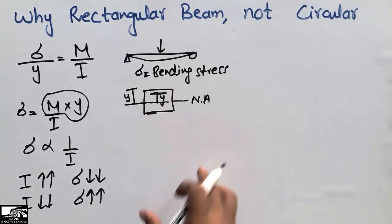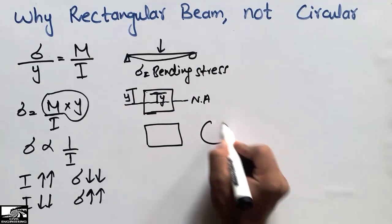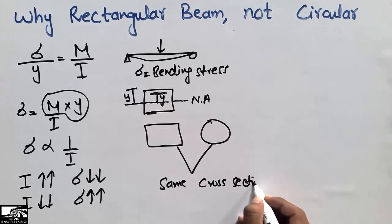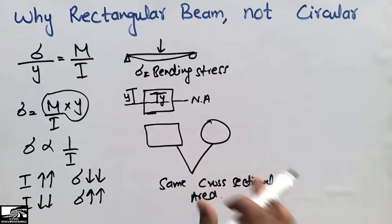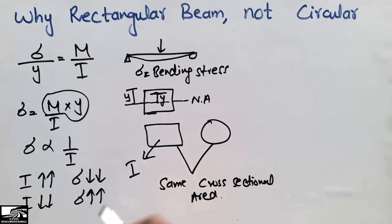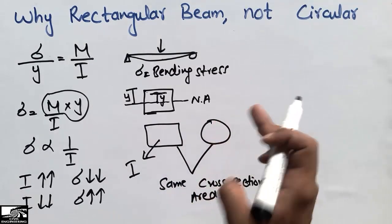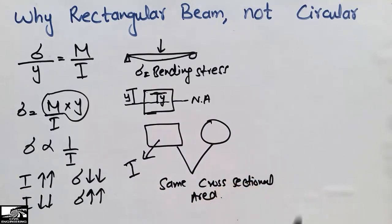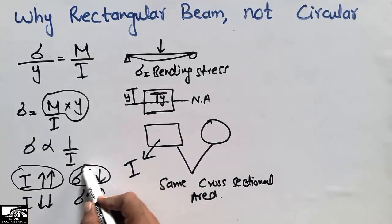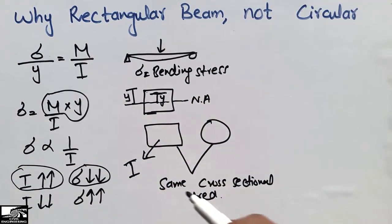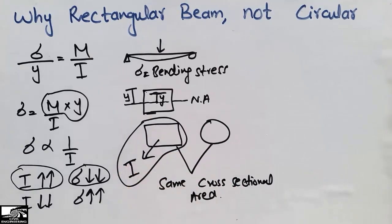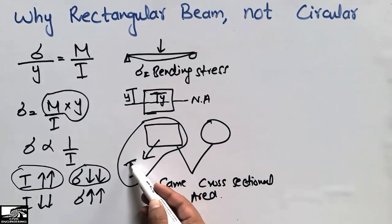In the case where a rectangular beam and a circular beam have the same cross-sectional area, the rectangular beam has a higher moment of inertia than the circular beam. Because of this higher moment of inertia, the rectangular beam experiences lower bending stresses, and therefore requires less reinforcement. This makes the rectangular beam the more economical design choice — which is the main reason we prefer it.